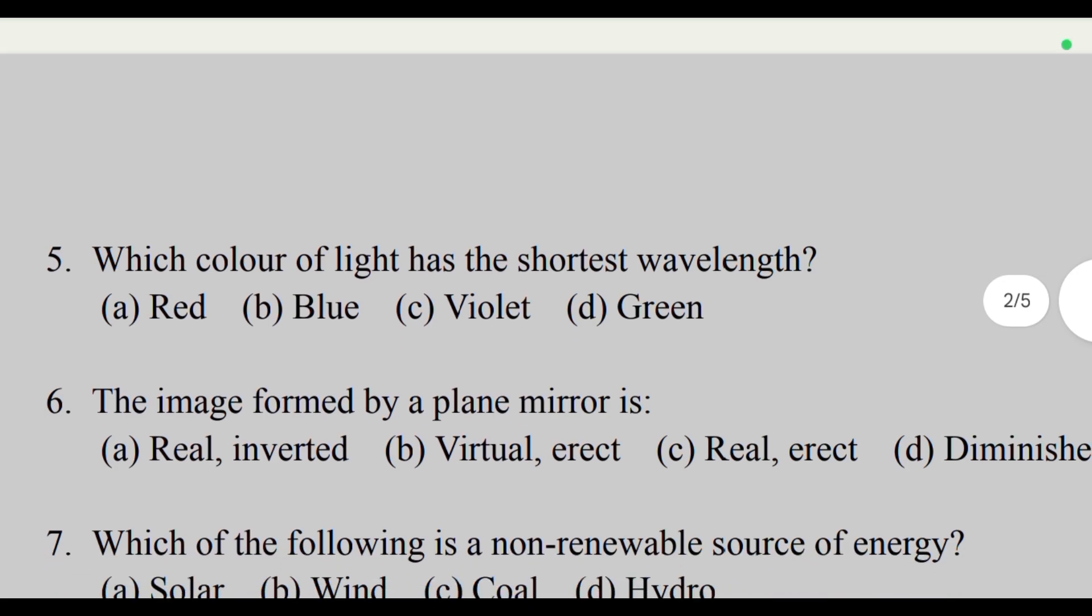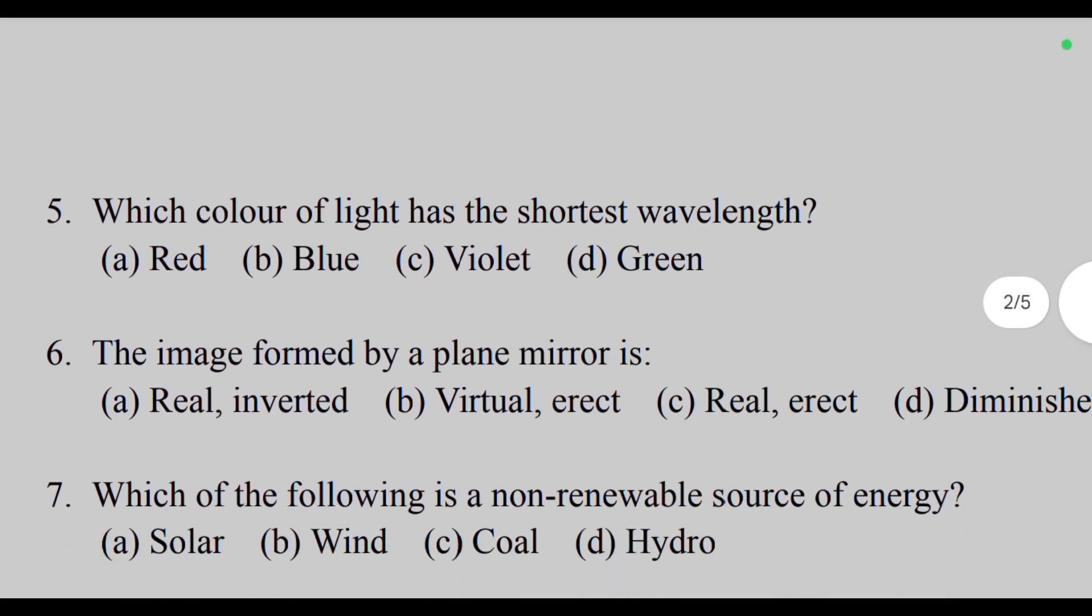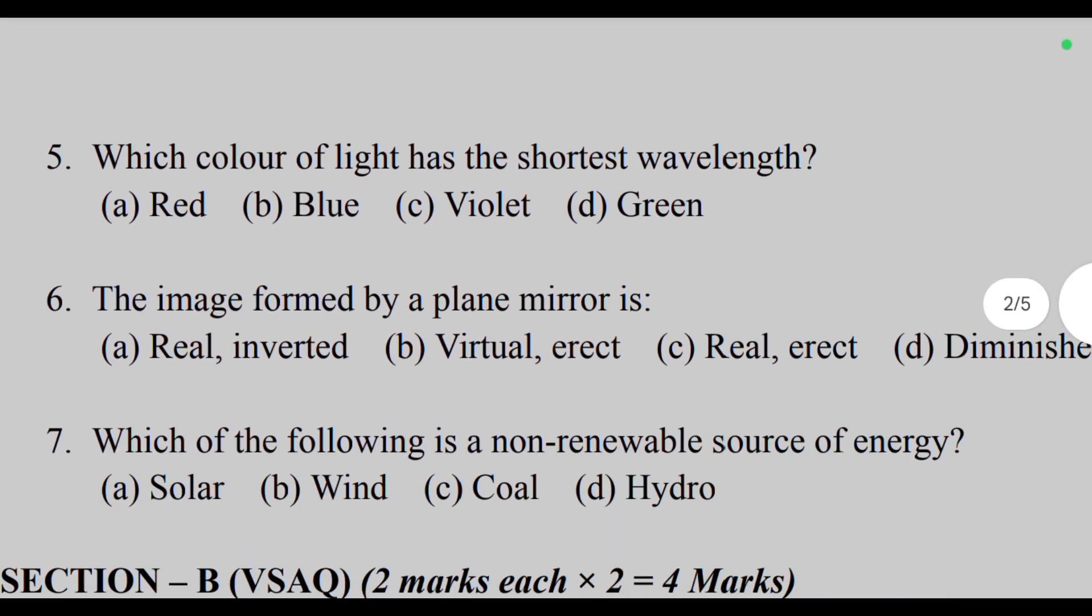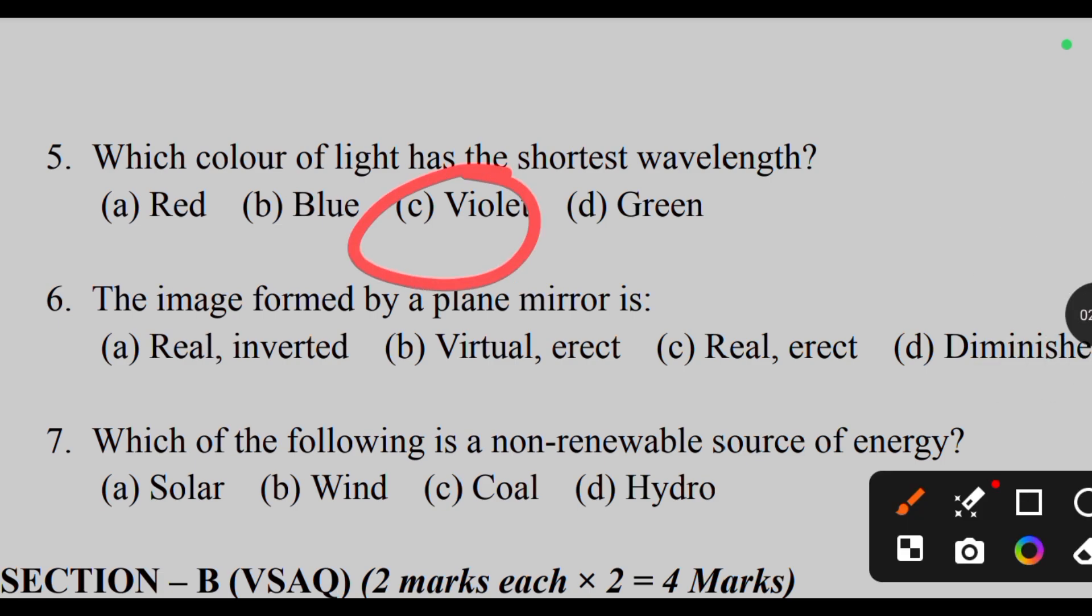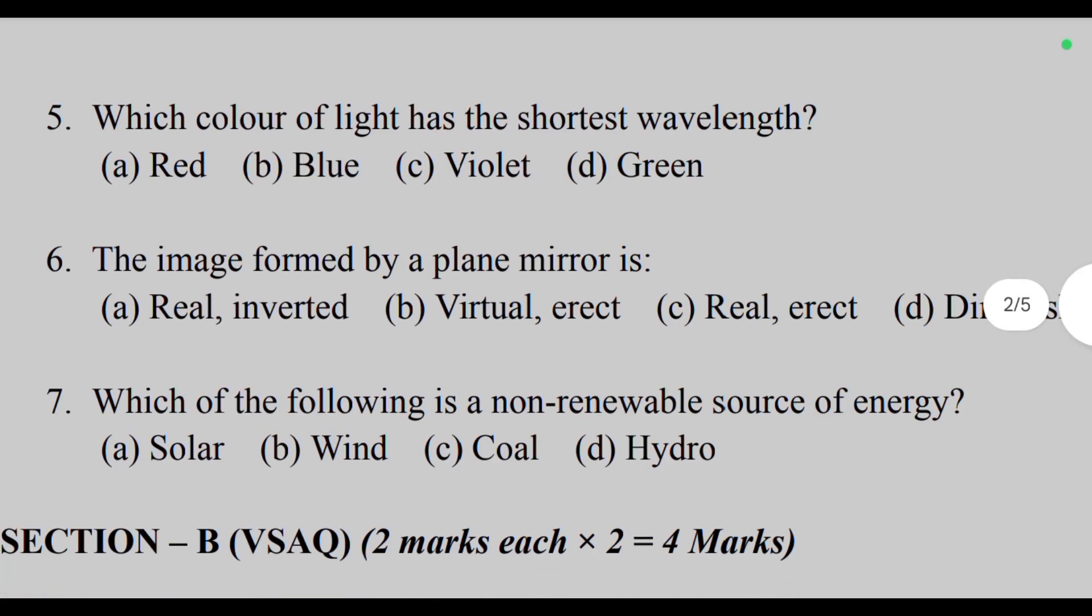Fifth question: Which color of light has the shortest wavelength? The answer is Violet. Question 6: The image formed by a plane mirror is...